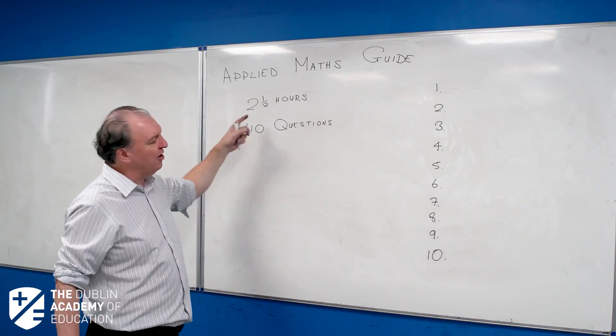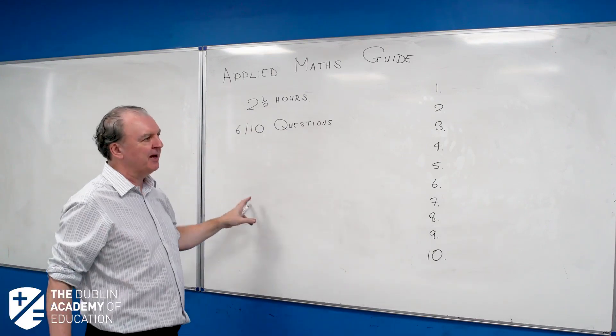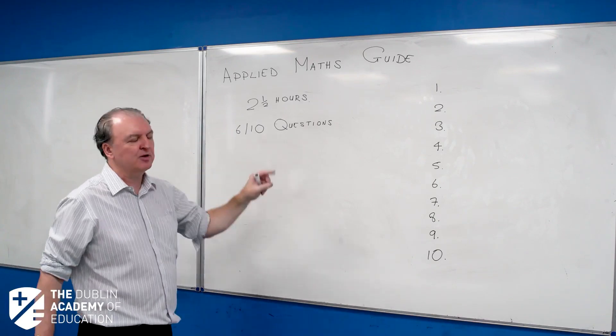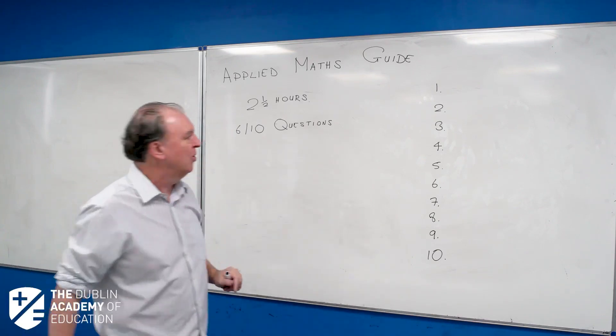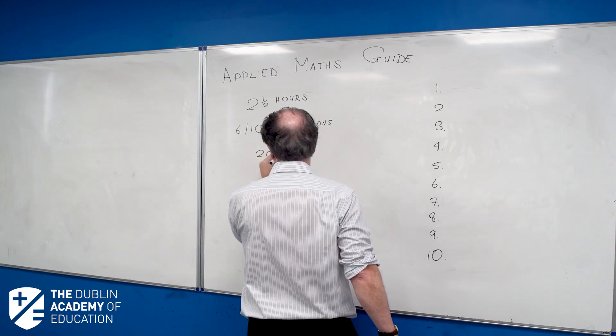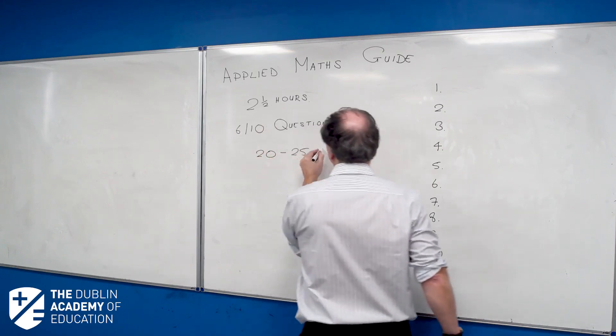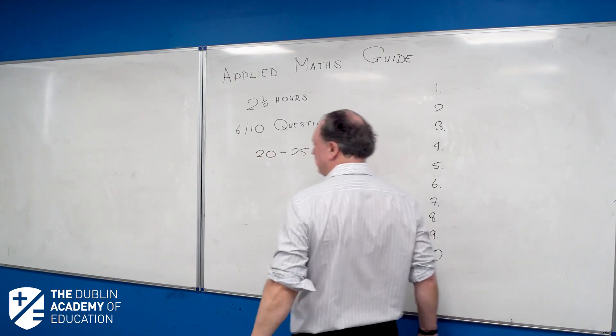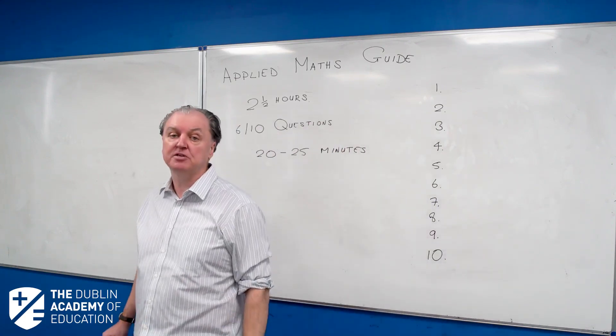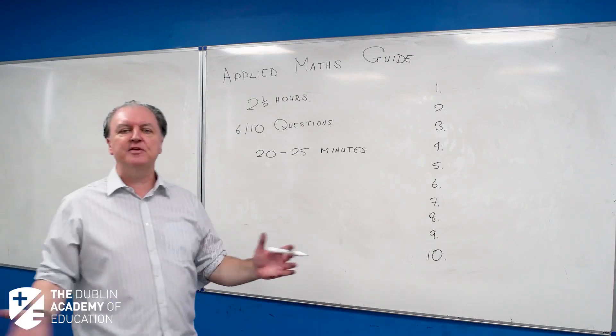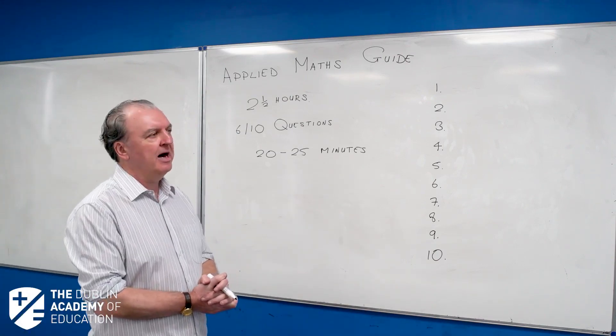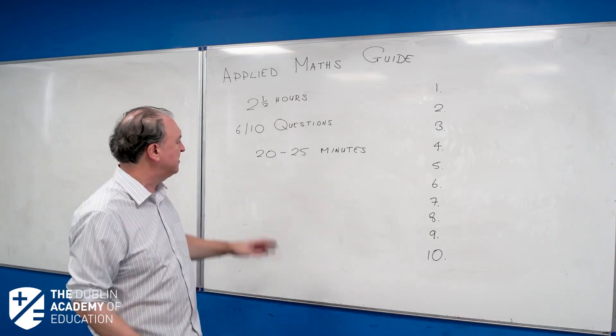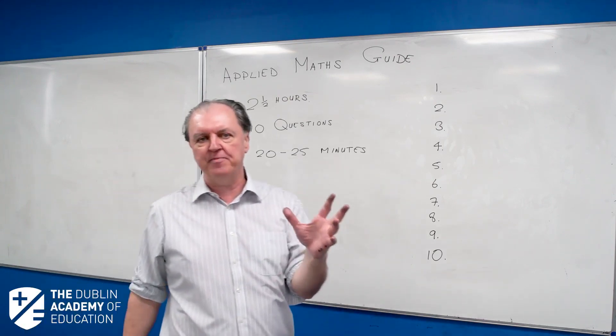I would love to have three hours for the paper because that would give me a nice countable thirty minutes per question. Two and a half hours makes it tight. You're talking about twenty to twenty-five minutes per question. That's very tight. Some questions have a twist in them, so you have to do thinking. If you start thinking for too long, the time will rapidly run away from you.